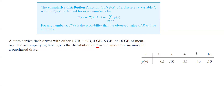The table shows: when Y equals 1 (1 gigabyte), the probability is 5%; when Y equals 2 gigabytes, the probability is 10%; when Y equals 4 gigabytes, the probability is 35%; when Y equals 8 gigabytes, the probability is 40%; and when Y equals 16 gigabytes, the probability is 10%.